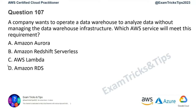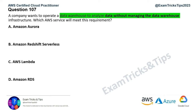Question 107: a company wants to operate a data warehouse to analyze data without managing the data warehouse infrastructure — which AWS service will meet this requirement? The key keywords are data warehouse and managed service. Amazon Aurora is a database service, not a data warehouse. There's a difference — database is for transaction processing (OLTP), whereas data warehouse stores large amounts of data for running reports. So Amazon Aurora is ruled out.